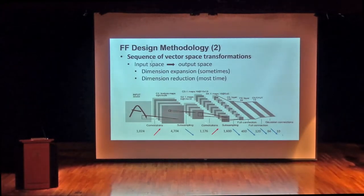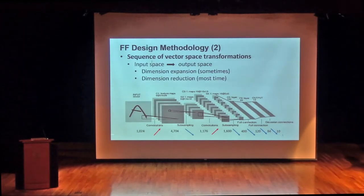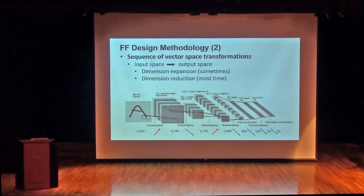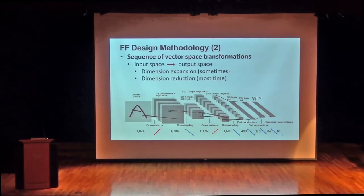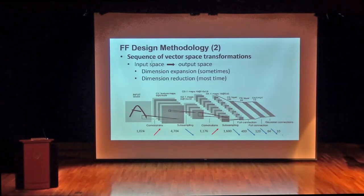You might expect dimension reduction throughout, but actually after one convolution, the dimension increases — to about 4,700. When you do 2×2 pooling you down-sample and drop, then you do another convolution and go up again, then drop, drop, drop until 10. So at some point you have dimension expansion rather than reduction. The reason is we use multiple filters to try to capture local structure.